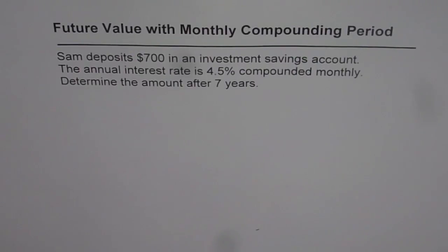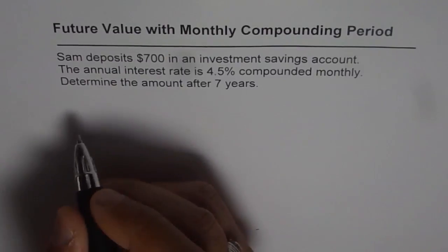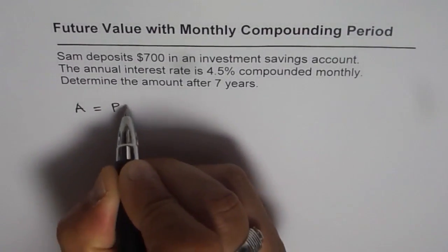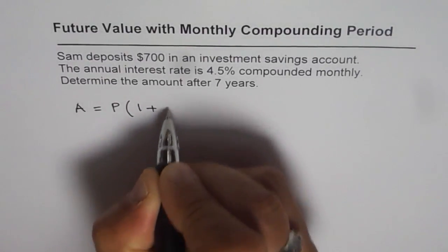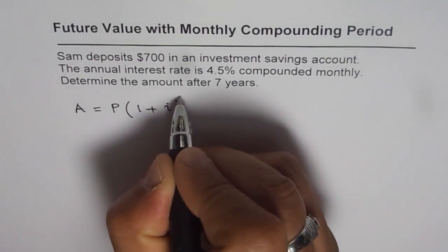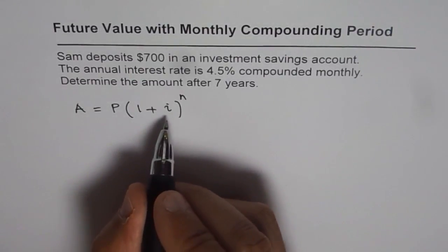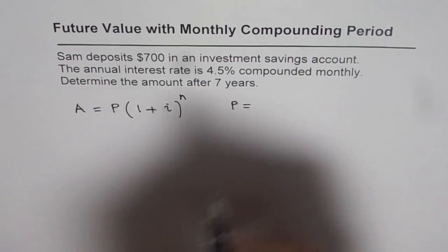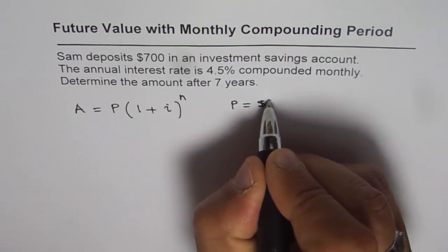Determine the amount after 7 years. Now we know future amount A should equal present amount times 1 plus interest rate to the power of N. In this formula P is the initial amount invested, which is $700 in this case. P is $700.